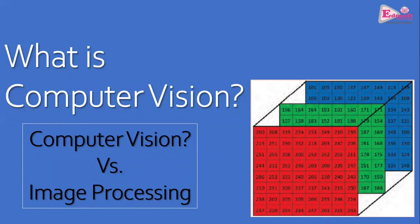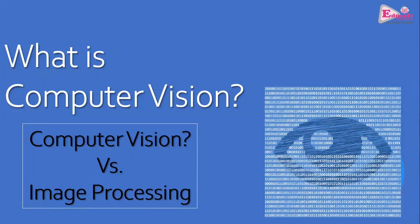These are the basic things to understand about how computers look at images. When a computer takes an image, every pixel's information is converted into numeric form. So for a computer, an image is actually a two-dimensional array of numbers. Computers only work with numbers, so all images are converted into their numeric form and processed.